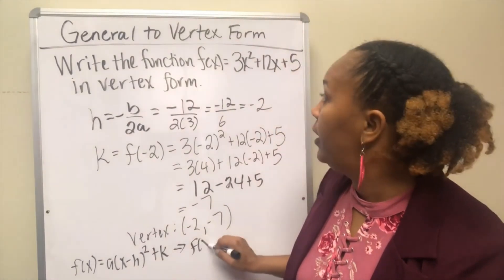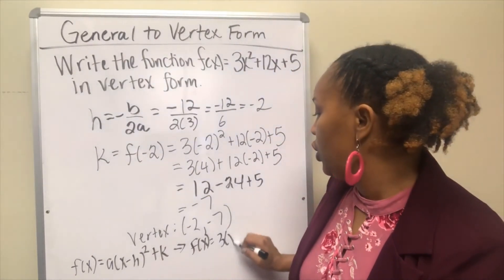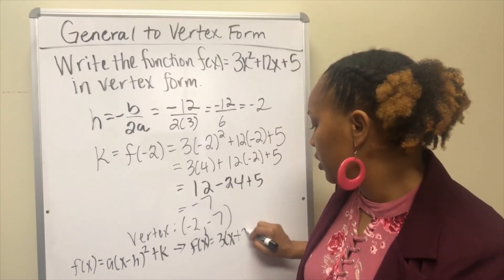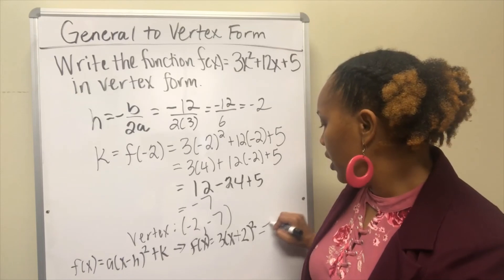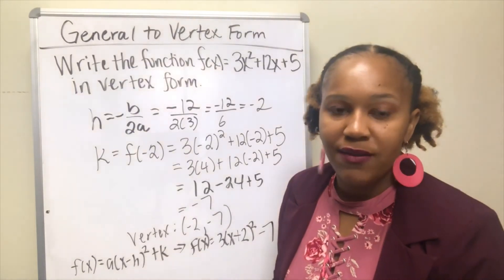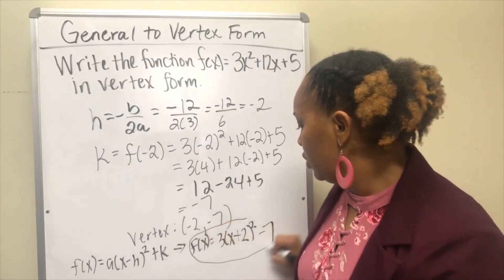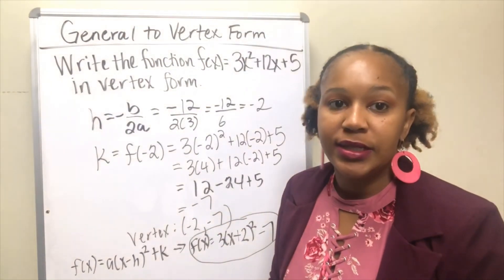Well your a is 3, your h is negative 2, so remember inside the parentheses it's going to be the opposite sign, and your k is negative 7. And so your vertex form will be f(x) = 3(x + 2)² - 7.